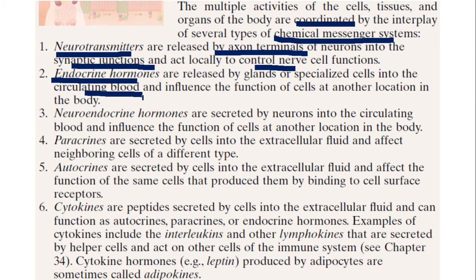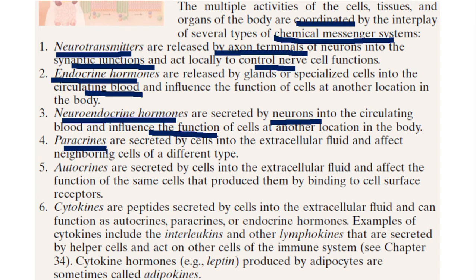Then we have the neuroendocrine hormones, which are secreted by neurons into the circulation and influence the function of cells at some other part of the body. Then you have the paracrines, secreted by cells into the extracellular fluid, and they affect the neighboring cells — not the same cells which are producing them.